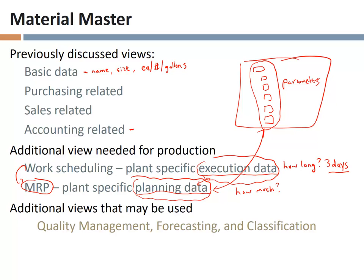Other views on the material master relevant to production include quality management — are we inspecting materials after they are manufactured? We talked before about how in purchasing, materials could come in and not be cleared as unrestricted until they went through inspection. We could do the same thing here: the output of production, instead of going directly into unrestricted, could go into inspection. After it passes inspection, it gets checked into the warehouse and is available for us to sell. We also have forecasting views and classification views.